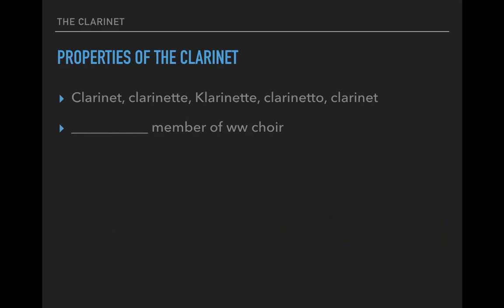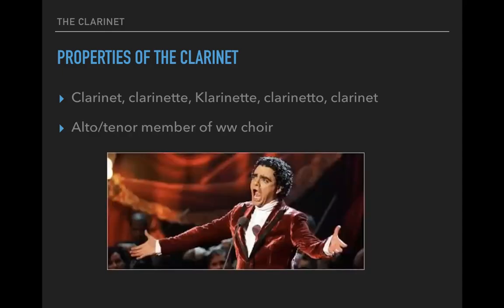If flute is the soprano member of the orchestra and we were calling oboe the alto member, what would you call the clarinet? Well, it does have quite a large range — a rather large high range and low range. For that reason you can think of it as both the alto and tenor member, extending the range lower than the oboe. This makes sense in terms of score order: flute, oboe, clarinet.